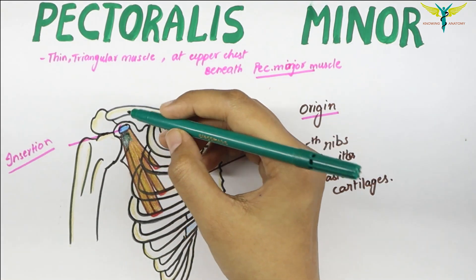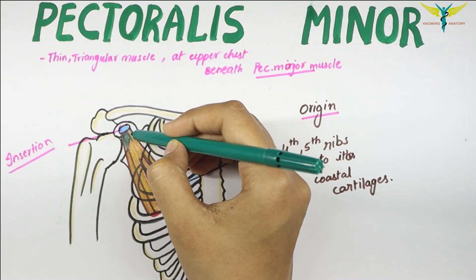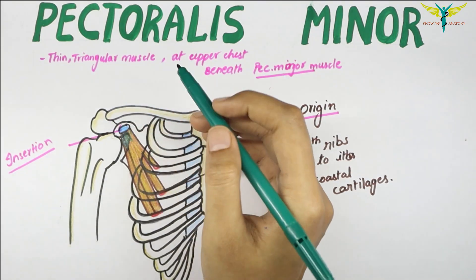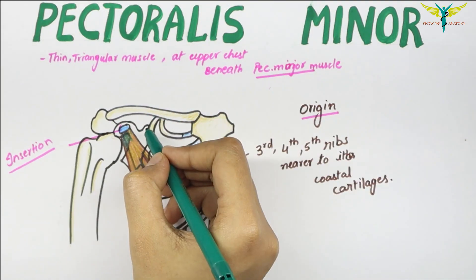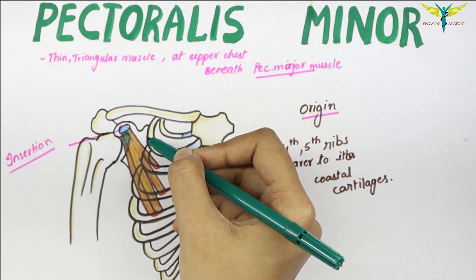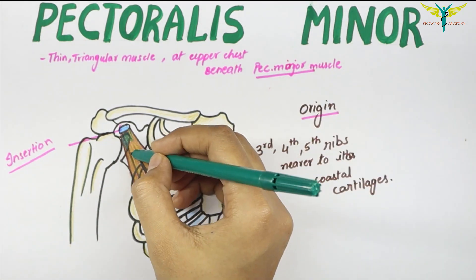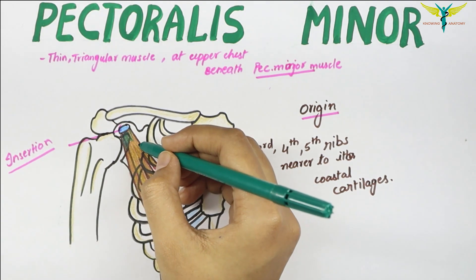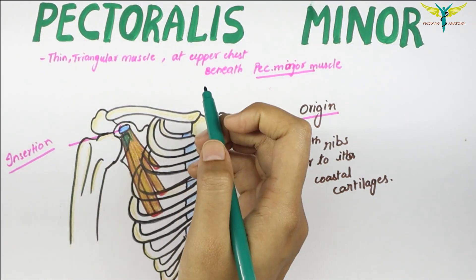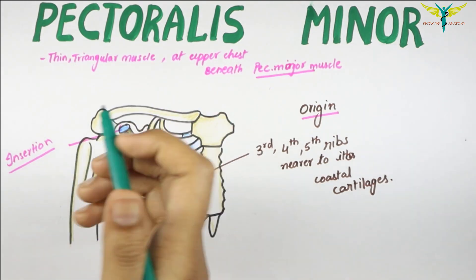The insertion of the pectoralis minor: it is inserted by forming a short and thick tendon into the medial border of the upper surface of the coracoid process of the scapula. The scapula bone is behind the ribs, and this pectoralis minor muscle forms a short, thick tendon attached to the upper border of the coracoid process.